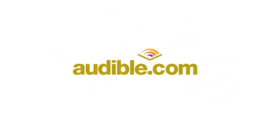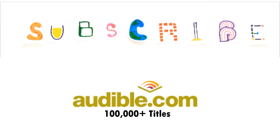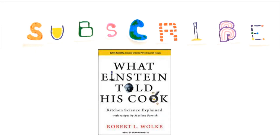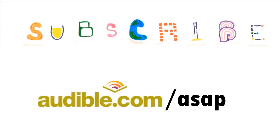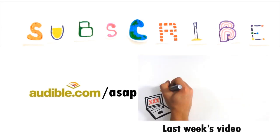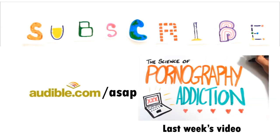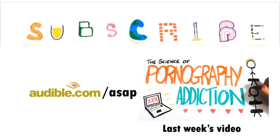This episode of ASAP Science is supported by Audible.com, the leading provider of audiobooks with over 100,000 downloadable titles across all types of literature. If you'd like to learn more about food science, I recommend the book What Einstein Told His Cook by Robert Wolk. You can download this audiobook or another of your choice for free at audible.com slash ASAP. Special thanks to Audible for making these videos possible and for offering you a free audiobook at audible.com slash ASAP and subscribe for more weekly science videos.